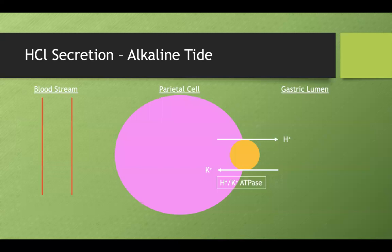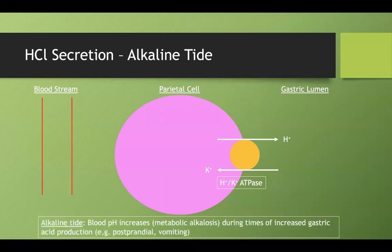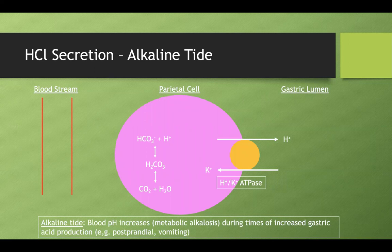I'm going to spend time talking about the alkaline tide because I think it's relevant. We can't just secrete hydrogen ions into the gastric lumen without getting that hydrogen from somewhere. The alkaline tide shows that your blood pH will actually increase when you are producing a lot of gastric acid. Using carbonic anhydrase, CO2 and water are converted to bicarbonate and a hydrogen ion. That hydrogen ion leaves into the lumen, while the bicarbonate leaves into the bloodstream — so your blood becomes more basic while your stomach lumen becomes more acidic. That's called the alkaline tide.